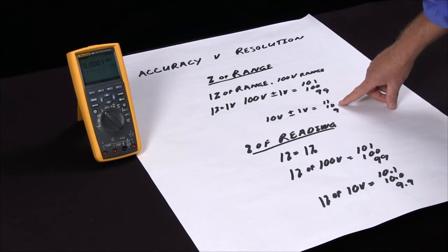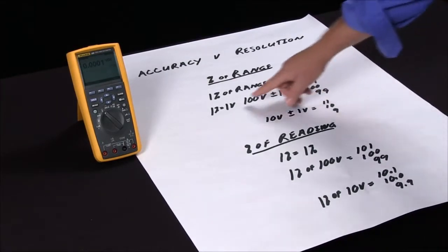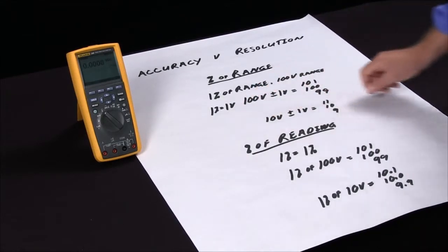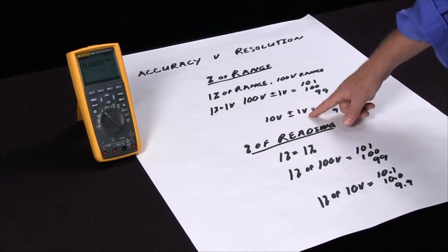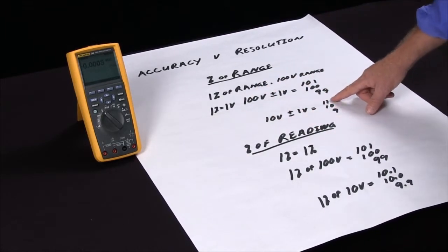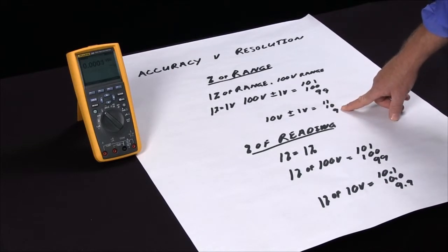But if we're measuring ten volts on this same meter, the one percent is plus or minus one volt. On a ten volt signal, plus or minus one volt will give us between eleven and nine, which is actually an inaccuracy of ten percent. So with percent of range, the accuracy actually decreases on the same range as you go down with the measurement values.